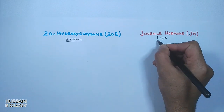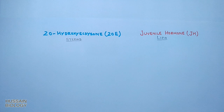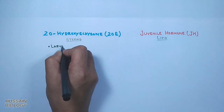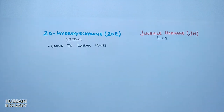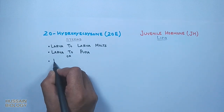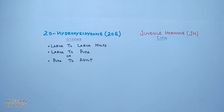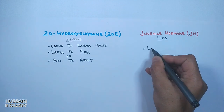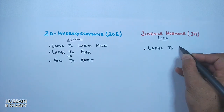20-hydroxyecdysone is a steroid while juvenile hormone is a lipid. 20-hydroxyecdysone drives different molts in insects — larvae to larvae molts, larvae to pupae, and larvae to adult molts. Juvenile hormone, on the other hand, drives only larvae to larvae molts.